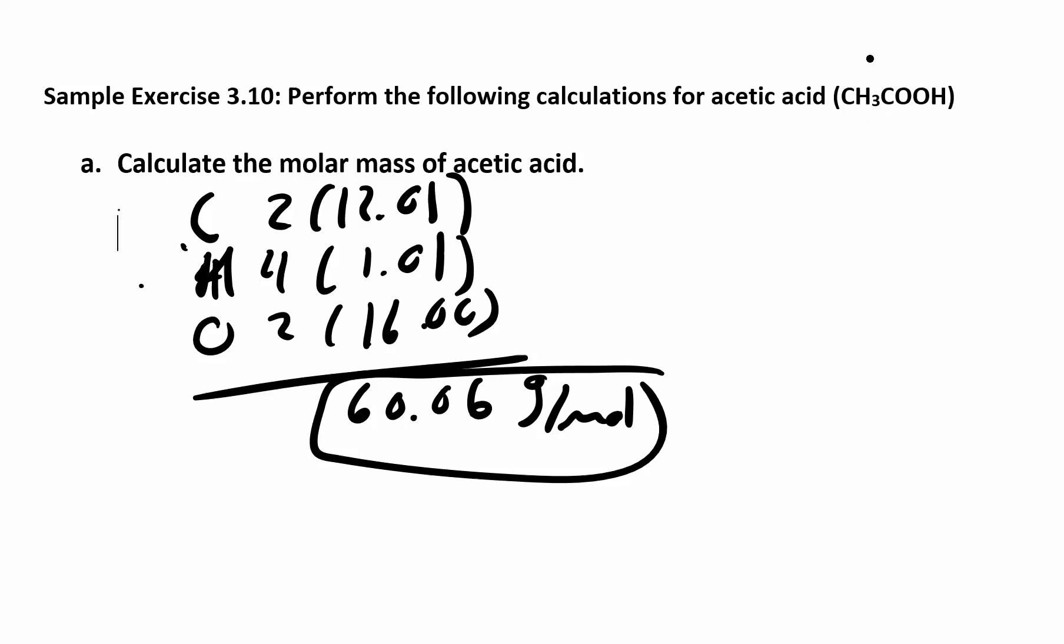In every molecule, we have 2 carbon atoms. For every one molecule, we have 4 hydrogen atoms and 2 oxygen atoms. This is the part that people tend to forget—they forget to figure out how many atoms are there per molecule.